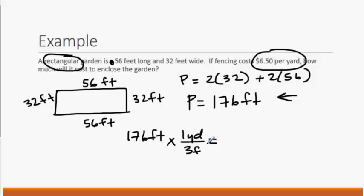And so when we multiply straight across, we get 176 over 3. And so we're going to have 176 over 3, and that's going to be yards. Our feet divide out, cancel.